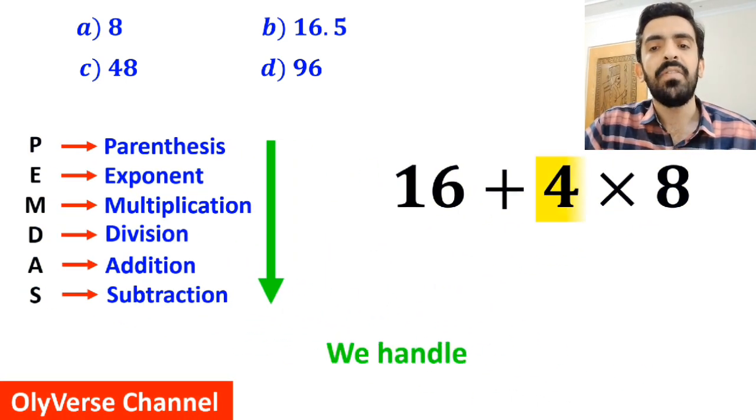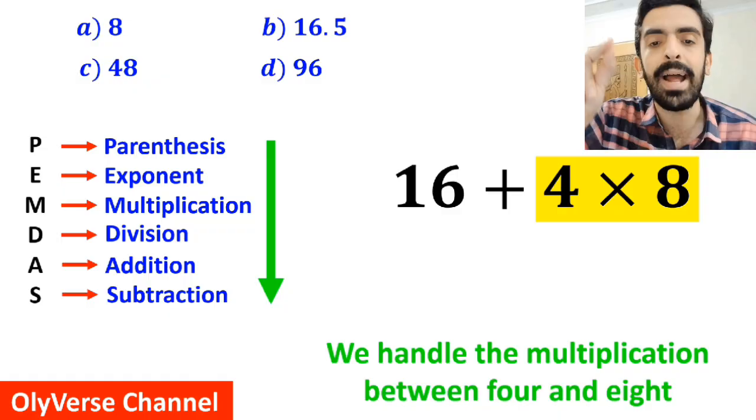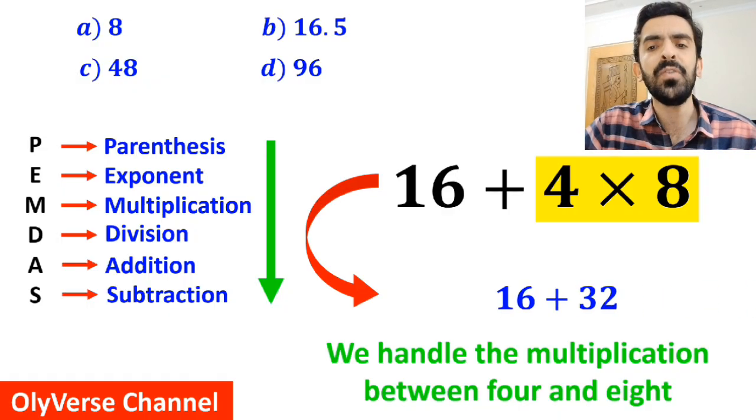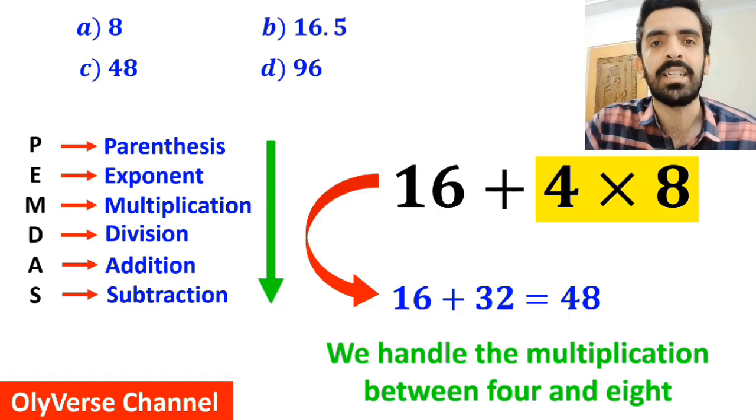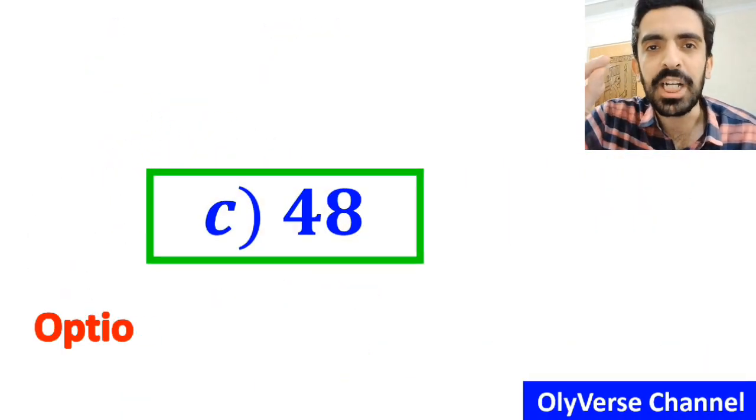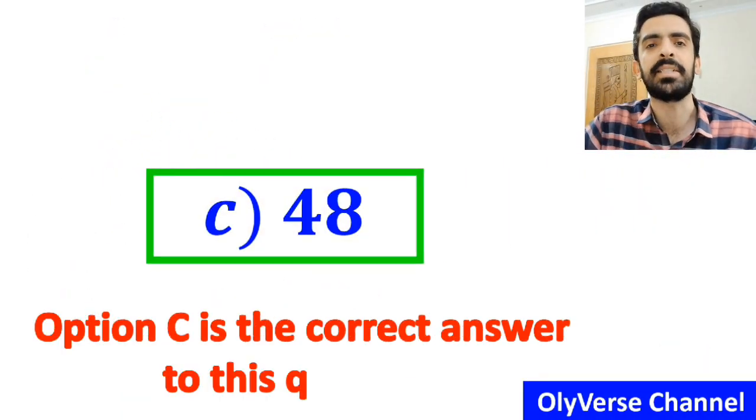In the final step, we handle the multiplication between 4 and 8, and this expression simplifies to 16 plus 32, which finally gives us the answer 48. Therefore, option C is the correct answer to this question.